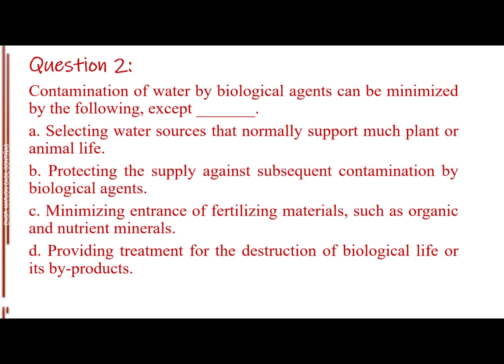Question number 2. Contamination of water by biological agents can be minimized by the following, except blank. Letter A, Selecting water sources that normally support much plant or animal life. Letter B, Protecting the supply against subsequent contamination by biological agents. Letter C, Minimizing entrance of fertilizing materials, such as organic and nutrient minerals. Letter D, Providing treatment for the destruction of biological life or its byproducts. The answer is Letter A, Selecting water sources that normally support much plant or animal life.